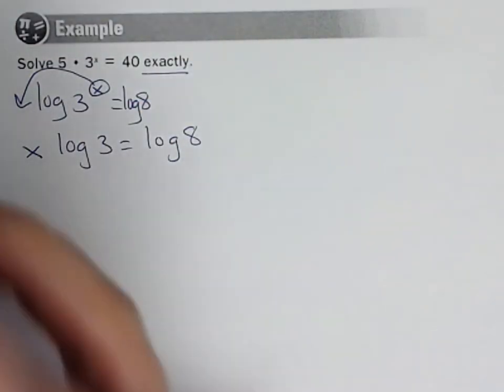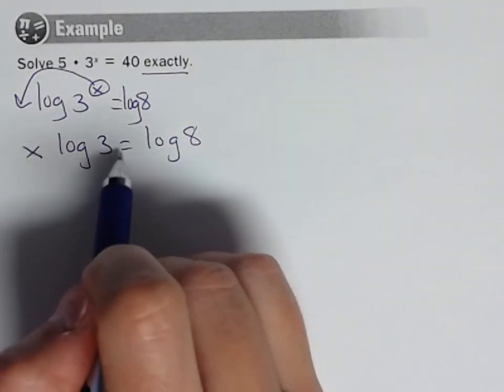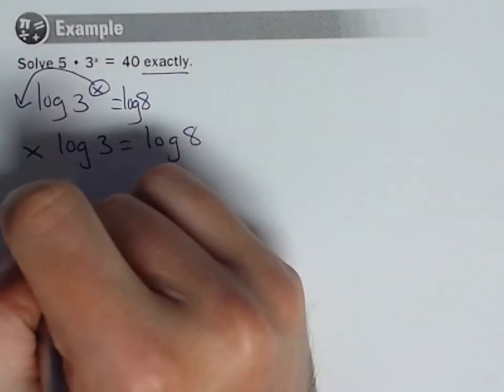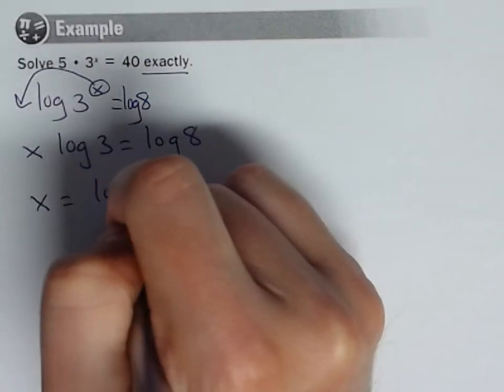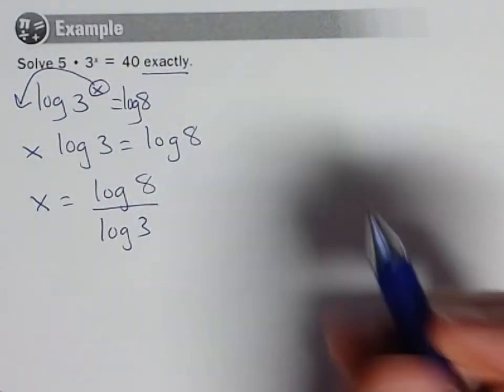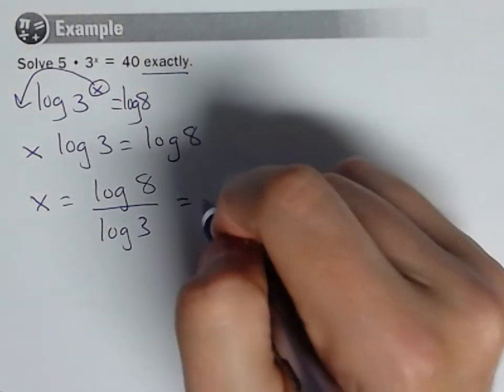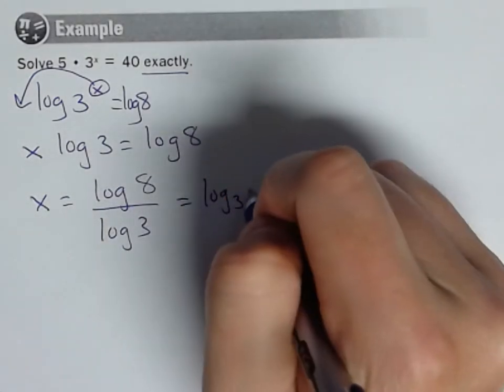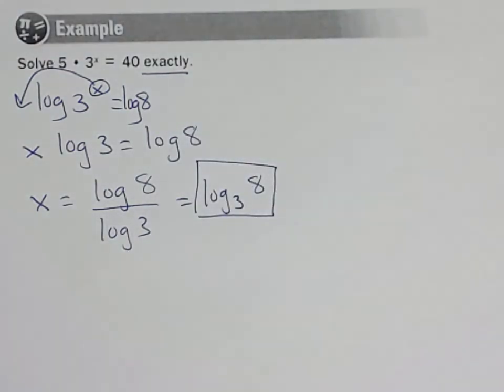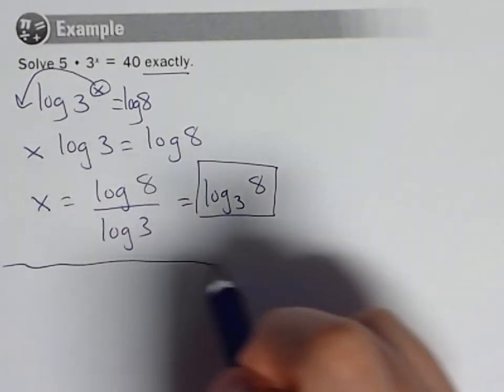I could have used natural log—you could do any log here. Now, how would I get x by itself? Well, log of 3 is just a number, so now I would divide both sides by it. So x equals the log of 8 over the log of 3, which would be the log base 3 of 8 if you just used our change of base formula from the previous lesson going backwards.